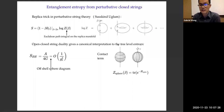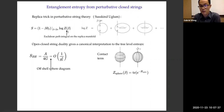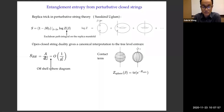Susskind and Ogburn were doing a replica trick in perturbative closed string theory. Here log Z is the Euclidean path integral on a replica manifold in string theory. The diagrams that contribute to the entropy either intersect the conical singularity or go around it. In particular, the contact term — the sphere diagram that intersects the conical singularity — gives us the Bekenstein-Hawking entropy. Susskind and Ogburn's idea was to apply open-closed string duality to give a canonical interpretation of this tree-level term.